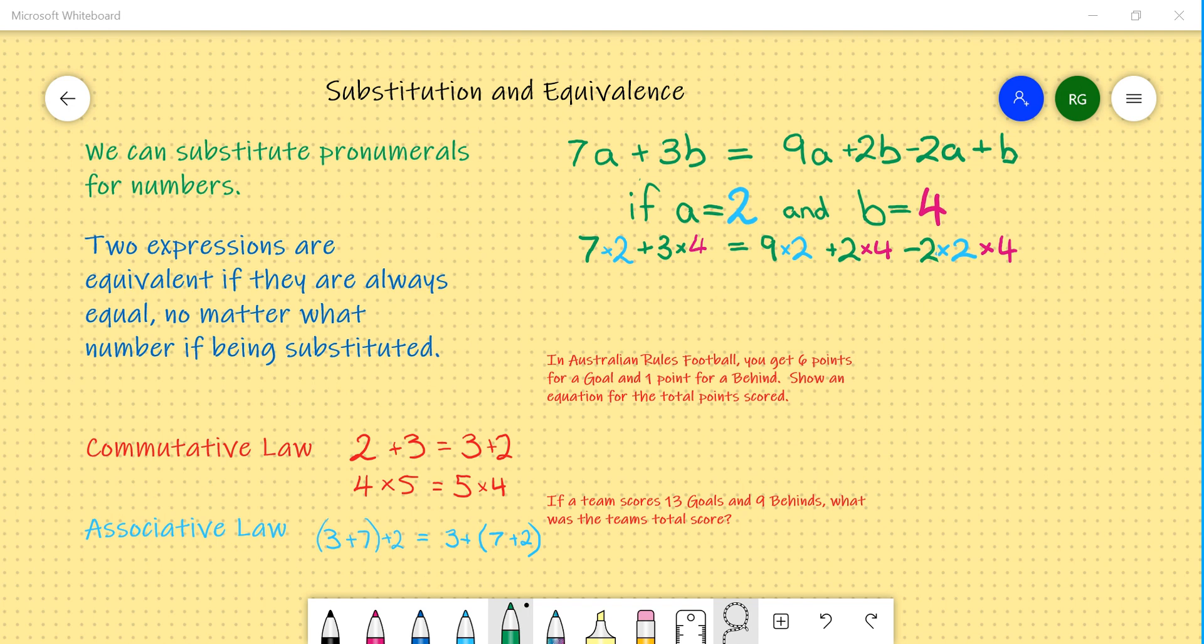As you can see, I've substituted in a equals 2 and b equals 4 into these two expressions which now make an equation. So if I was to solve each component here, we would have 14 plus 12 is equal to 18 plus 8 minus 4.